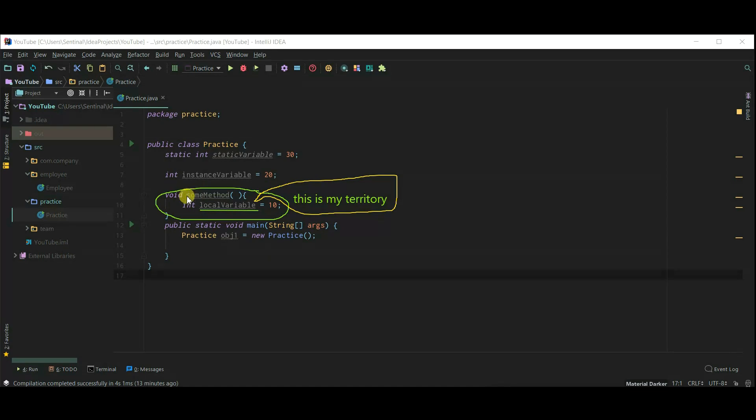another is instance variable and the last one is local variable. Now, this sum method is local variables territory. We can access or do anything with this variable only inside sum method. You can't access local variables outside this method.